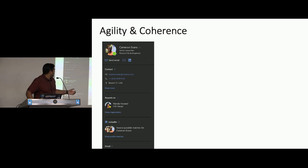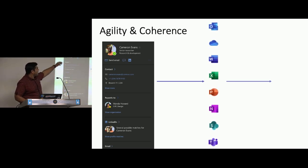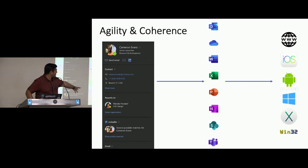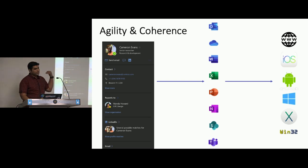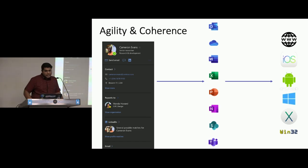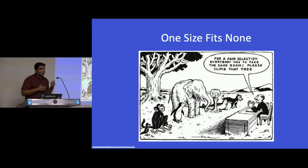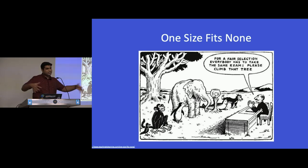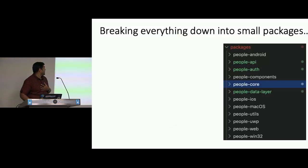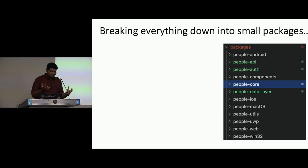To summarize, if you have a PeopleCard across all applications like Outlook, OneDrive, Word, Excel, PowerPoint, Notebook, SharePoint, Teams, and across six platforms, when thinking about good agility and coherent experiences, you have to remember one thing: no one size fits everyone. You can't have one solution that works across all these endpoints. The most important thing to do is breaking things into small packages.